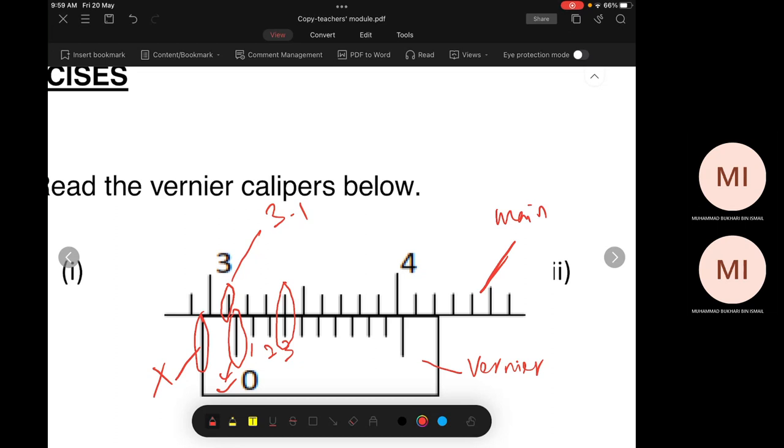And then how do you take the reading? First you have main scale. Main scale is 3.1 centimeter. And vernier scale. Vernier scale is, this three. Write a three here.